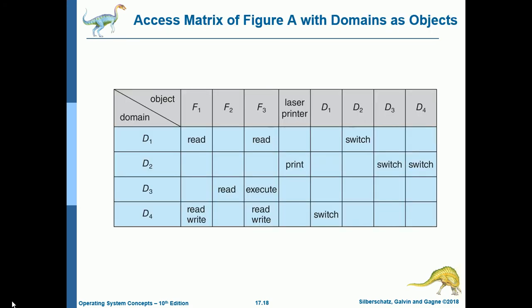The access matrix is extended with domains as objects to support dynamic protection. D1 can switch to D2. D2 can switch to D3 and D4. D3 cannot switch to any domain. D4 can switch to D1.